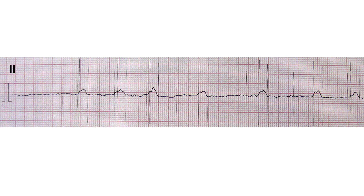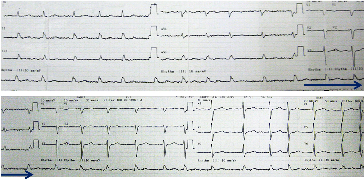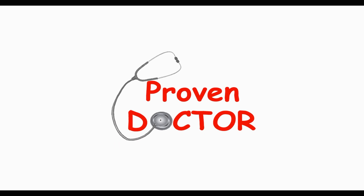3-channel ECG machines record first the limb leads, then the augmented leads, then V1 to V3, and finally V4 to V6. A rhythmogram may be recorded below these leads.